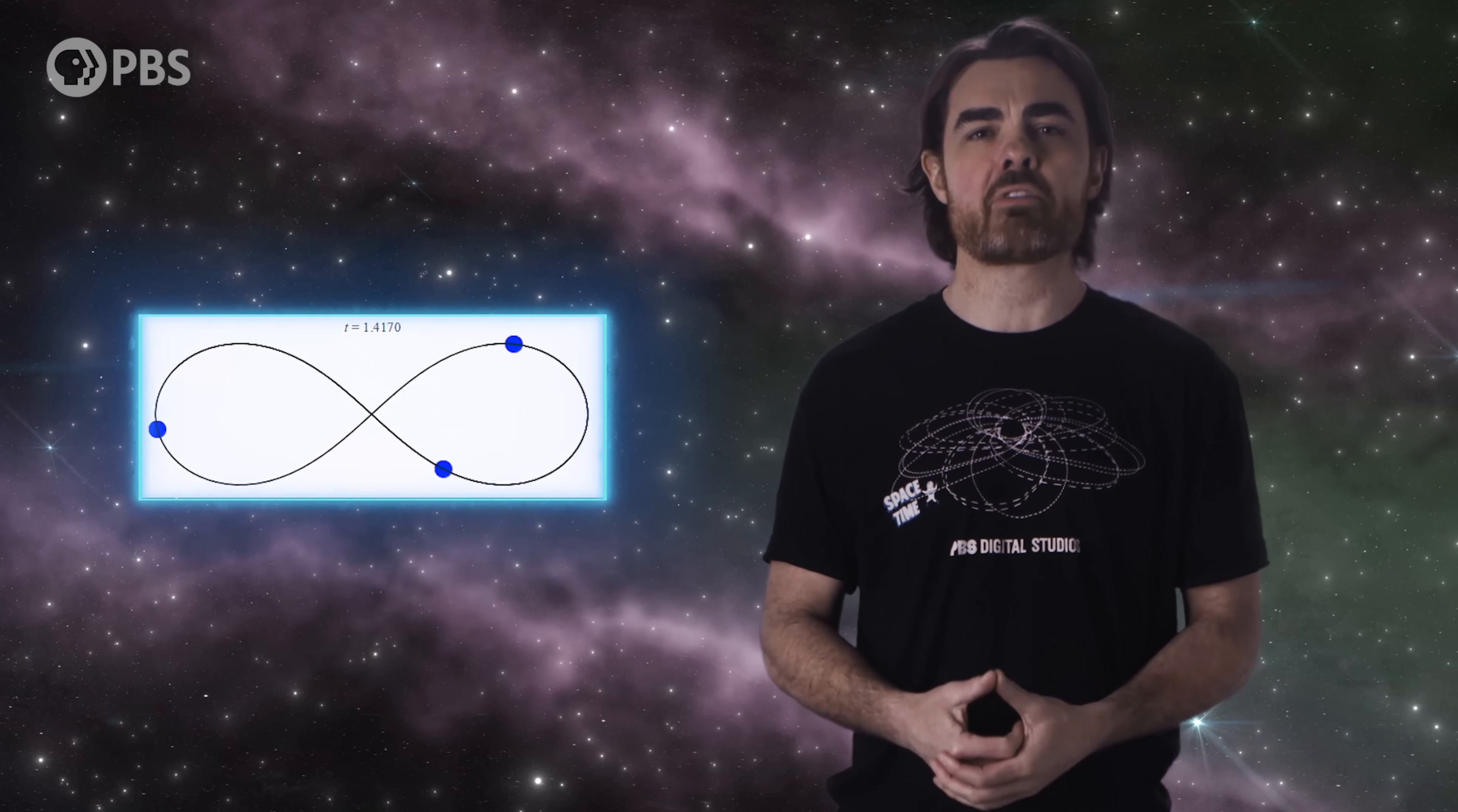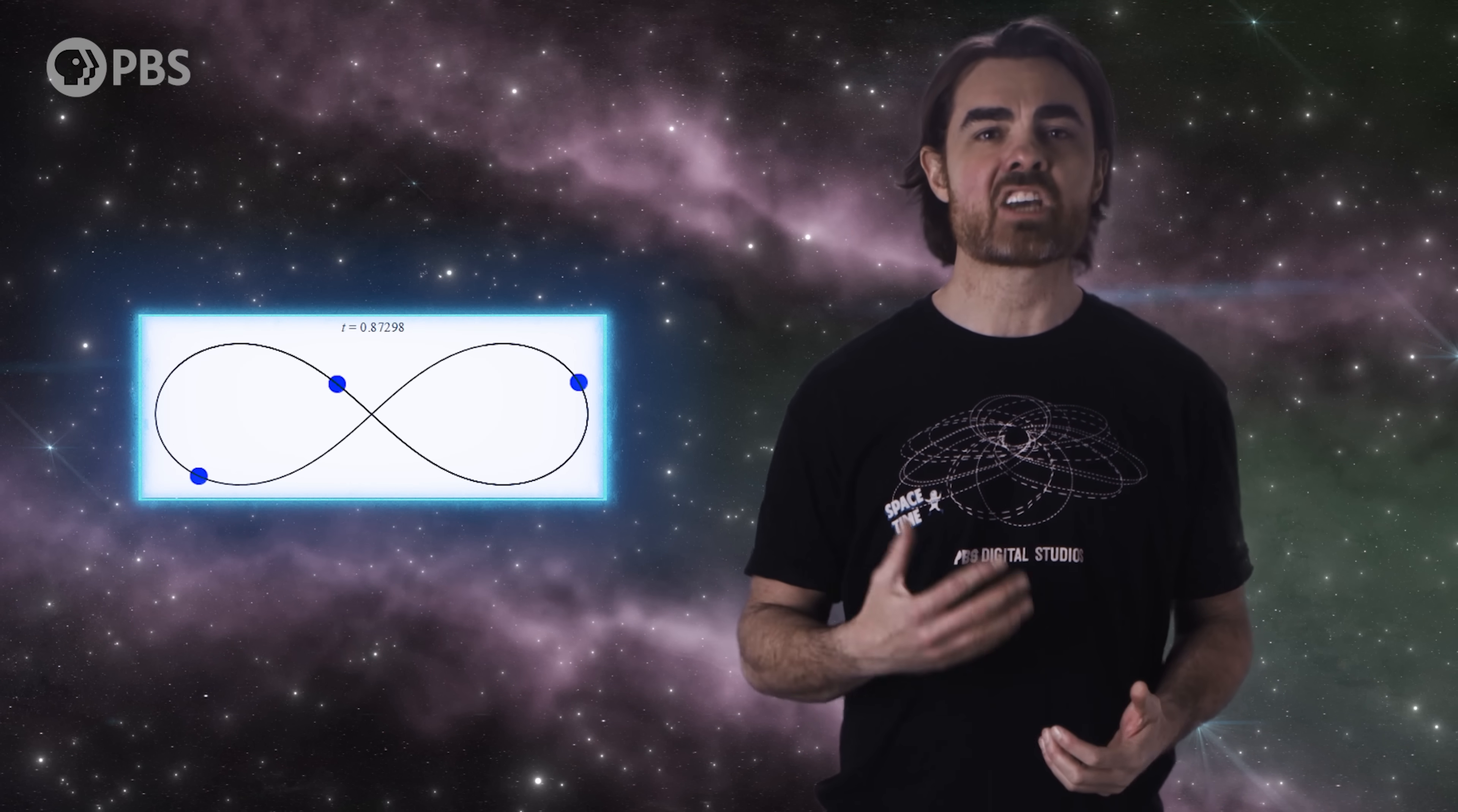In the 70s, Michel Hénon and Roger Broucke found a family of solutions involving two masses bouncing back and forth in the center of a third-body's orbit. In the 90s, Chris Moore discovered a stable figure-eight orbit of three equal masses. The numerical discovery of the figure-eight solution was proved mathematically by Alain Chenciner and Richard Montgomery, and insights gained from that proof led to a boom in the discovery of new periodic three-body orbits.